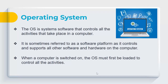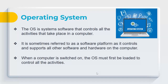The operating system is system software that controls all activities taking place on the computer. It's sometimes referred to as a software platform because it controls and supports all other software and hardware. When the computer is switched on, the operating system must first be loaded to take control.